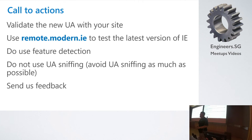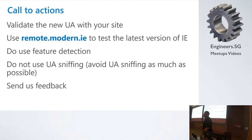People might say: if you don't identify yourself as Edge, they can't sniff you. In the UA string they have Edge/12.0 — get rid of that. But the UA string is part of web development; you cannot remove it, you just add to it.